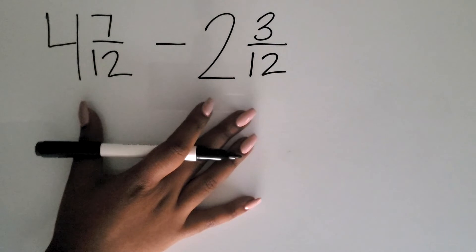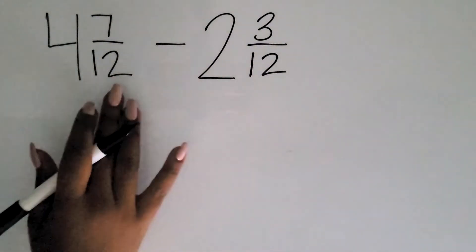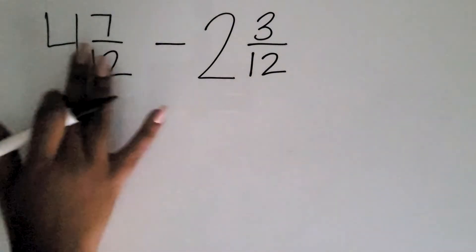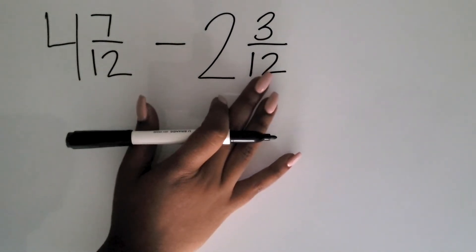One way is just using the algorithm where they are going to subtract across. As long as they know that the denominators are the same, they can subtract across using the algorithm.